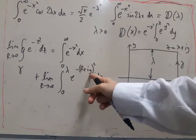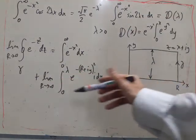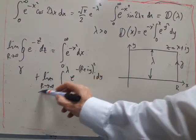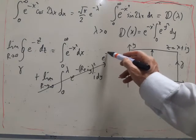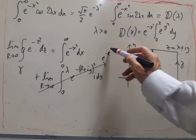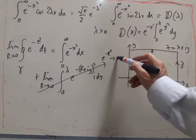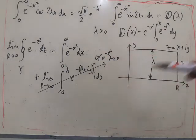this clearly is going to go to zero. And y is just a positive number, which just goes up to lambda. So this is going to basically go off like e to the minus r squared, which goes to zero.